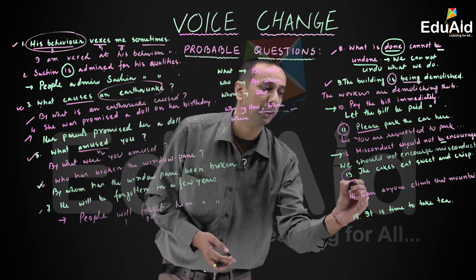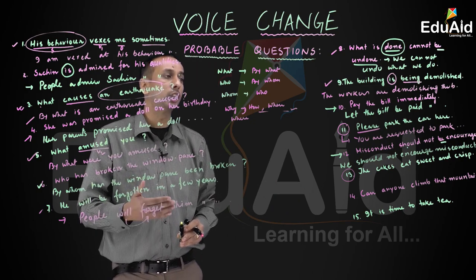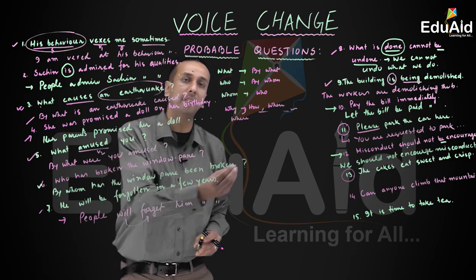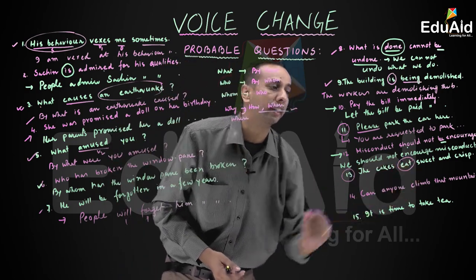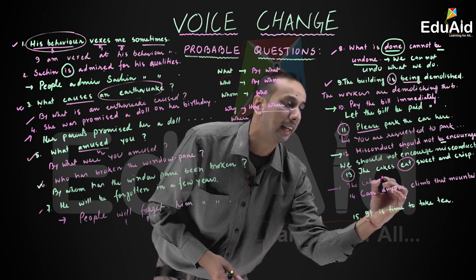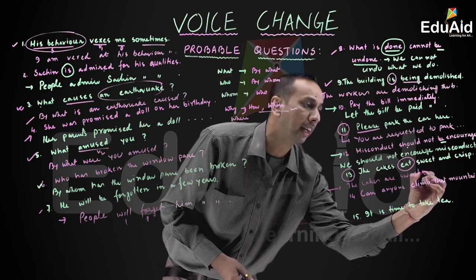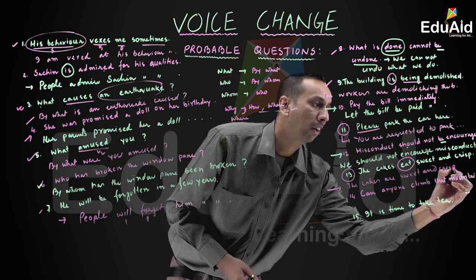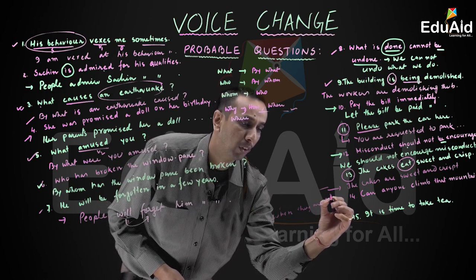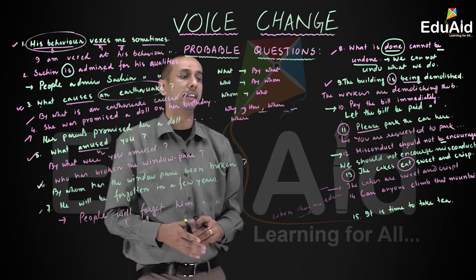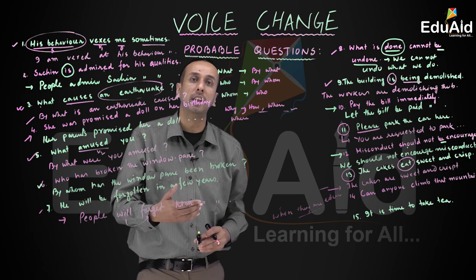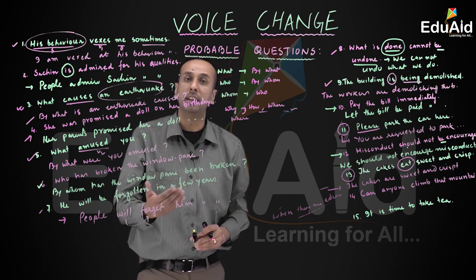Question number thirteen is a special type: 'The cakes eat sweet and crisp.' This means the cakes are sweet and crisp when eaten. The passive form is: 'The cakes are sweet and crisp when they are eaten.' Similarly, 'Honey tastes sweet' becomes 'Honey is sweet when it is tasted,' and 'The medicine tastes bitter' becomes 'The medicine is bitter when it is tasted.'